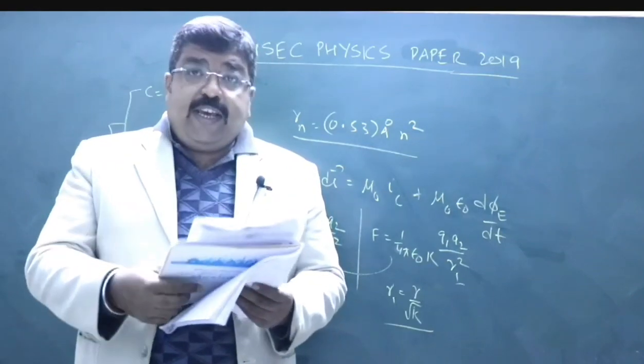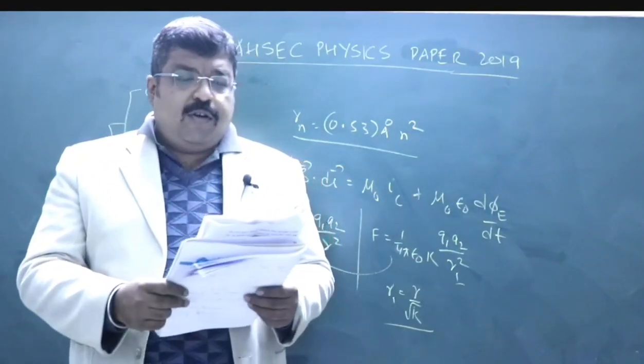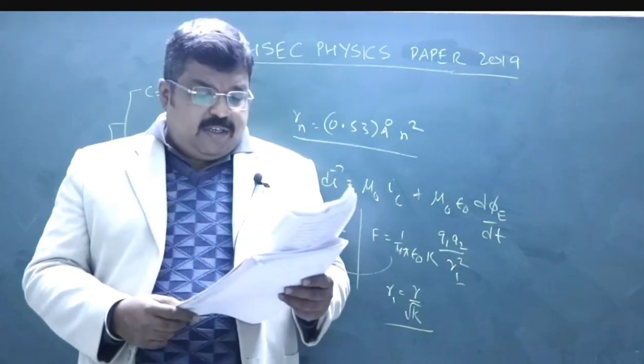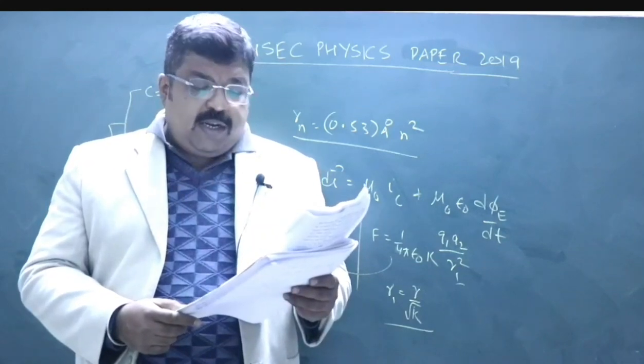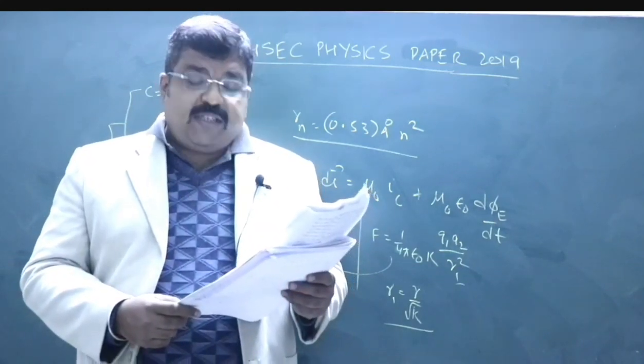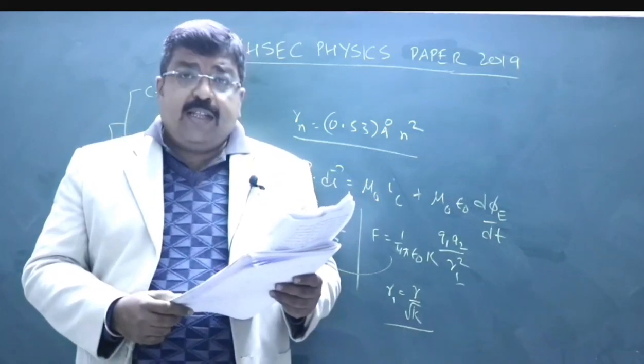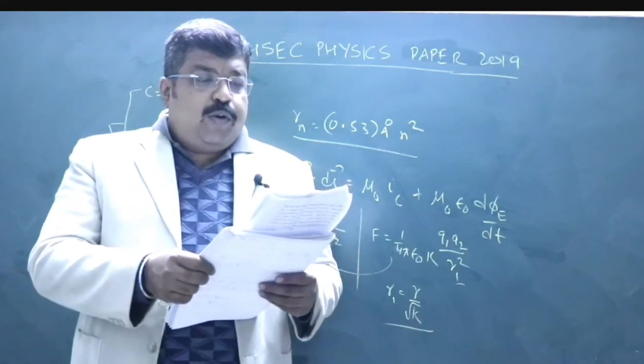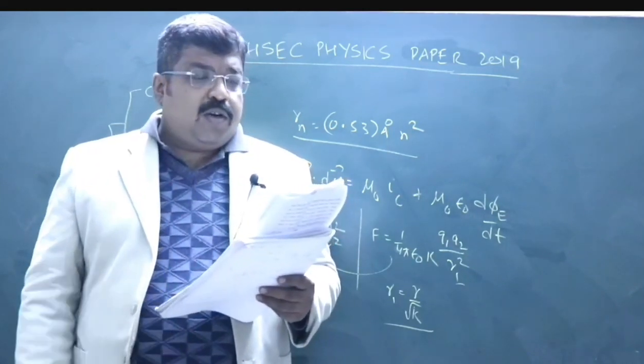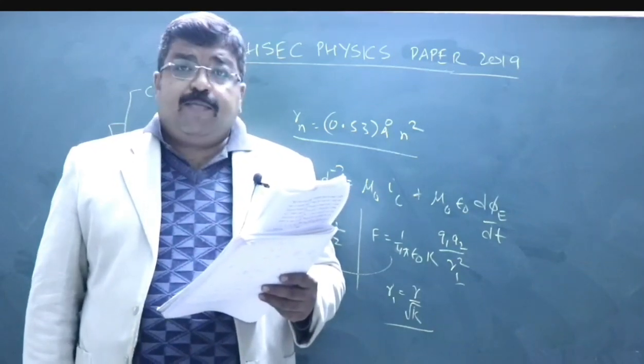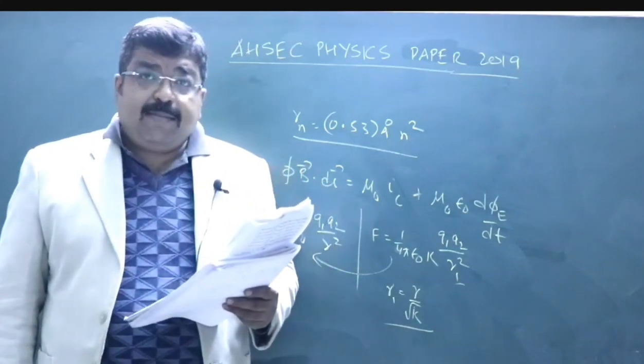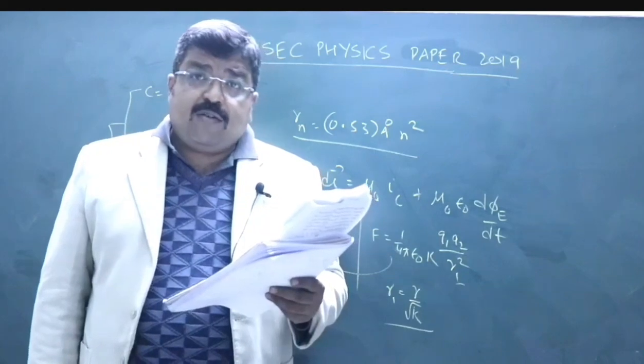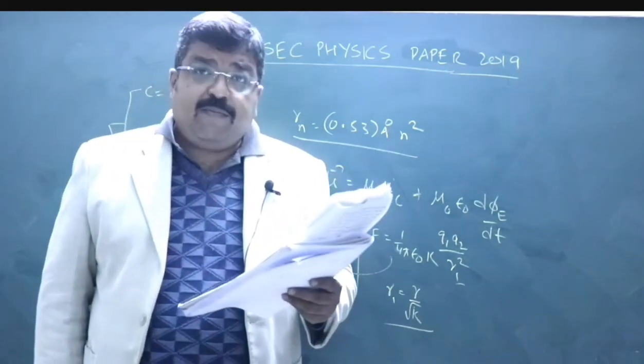3H: Draw a diagram to show correction in myopic eye and then one numerical based on that. The diagram is given on page 337 volume 2, and the numerical is example 9.12 page 338. The answer is power should be plus 2.67 diopter. 3I: What are coherent sources and find the intensity at a point where path difference is lambda by 3? This is exercise problem 10.5 page 383 volume 2.